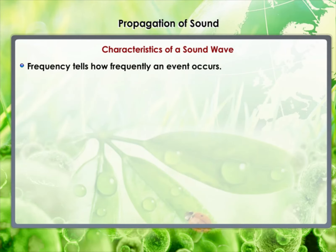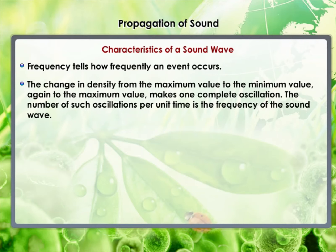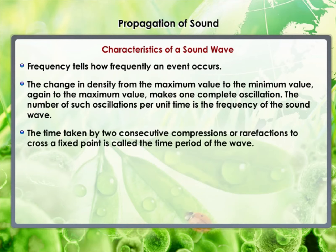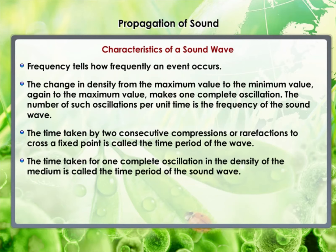Frequency tells us how frequently an event occurs. When sound is propagated through a medium, the density of the medium oscillates between a maximum and a minimum value. The change in density from maximum to minimum and back to maximum makes one complete oscillation. The number of such oscillations per unit time is the frequency of the sound wave, usually represented by the Greek letter nu (ν). Its SI unit is hertz (Hz). The time taken by two consecutive compressions or rarefactions to cross a fixed point is called the time period of the wave (T). Its SI unit is second (s). Frequency and time period are related as: ν = 1/T.